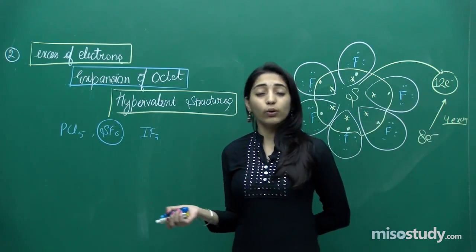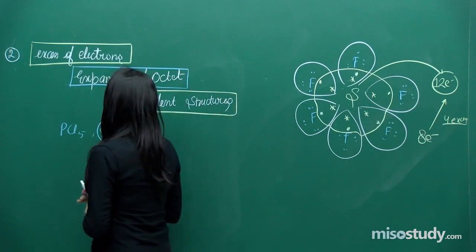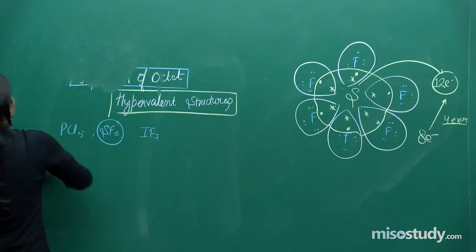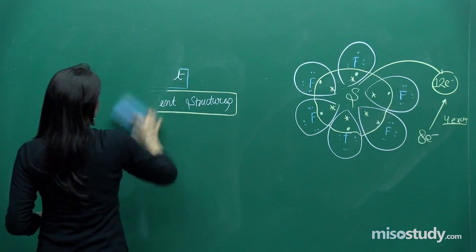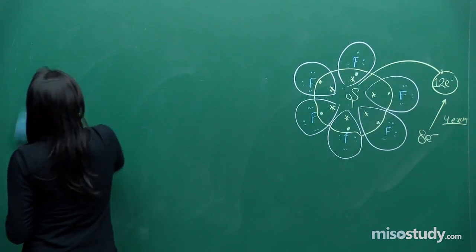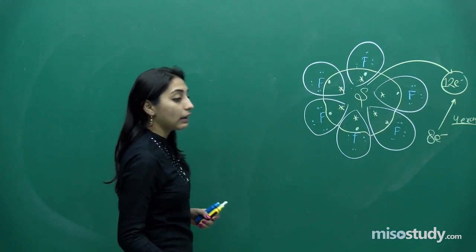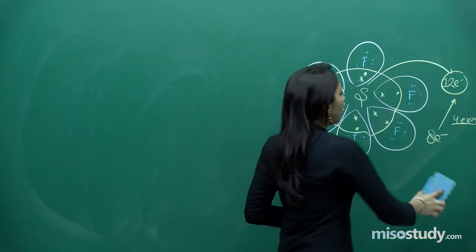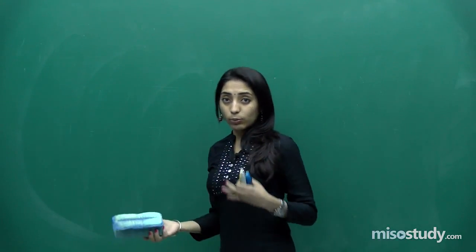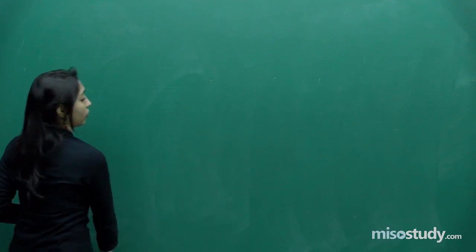Lewis could not give any justification to such hypervalent compounds. He considered them exceptions — compounds having more electrons in the valence shell than the octet rule allows. According to Lewis, all these compounds should have been unstable because the octet of the central atom is not complete or is exceeded. However, later new theories were given, and experimental results confirmed that these compounds do exist in nature and are stable.